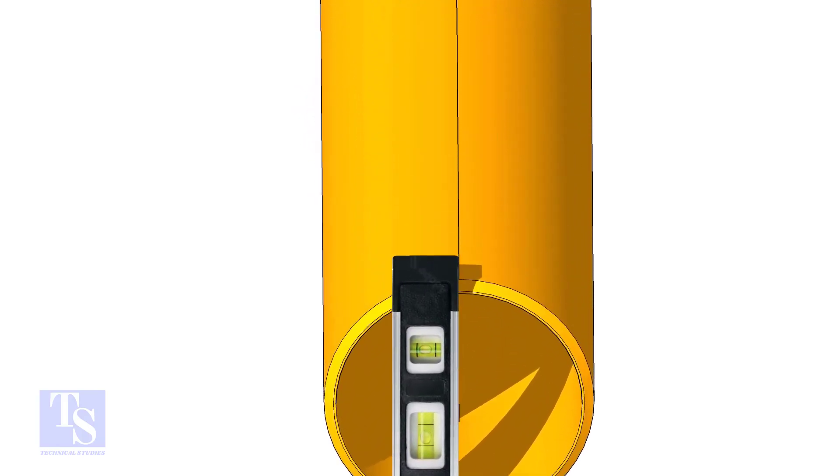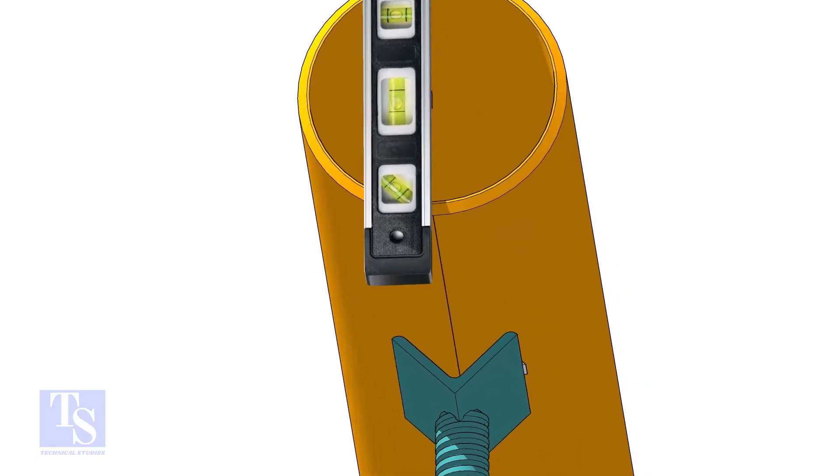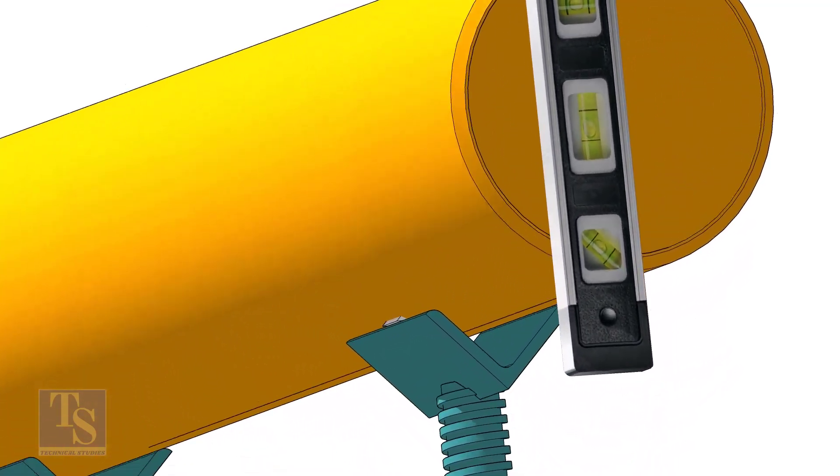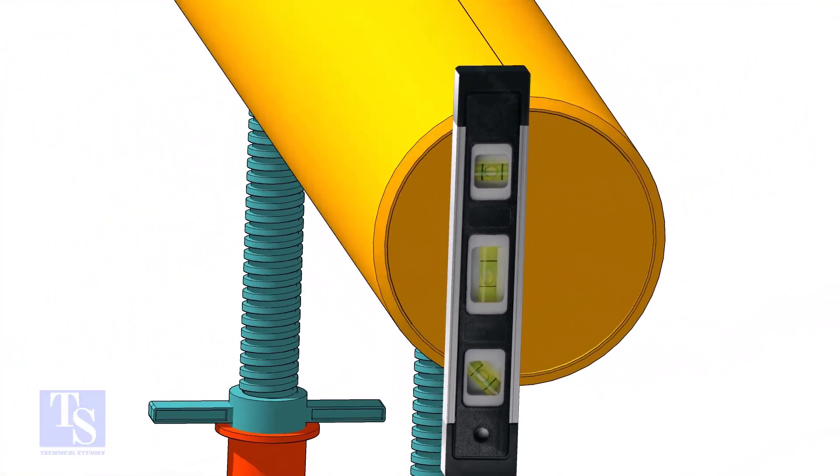Level the pipe horizontally and vertically as shown. After leveling, arrest the pipe to stop it from rotating.